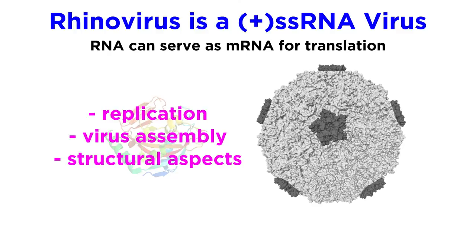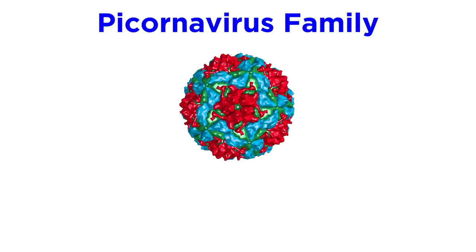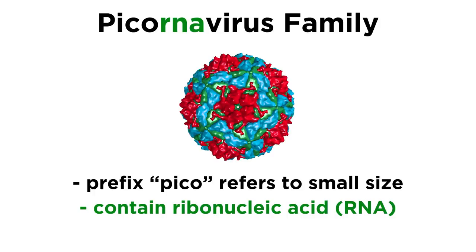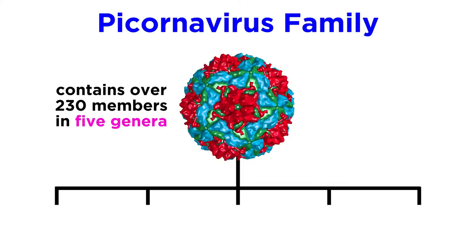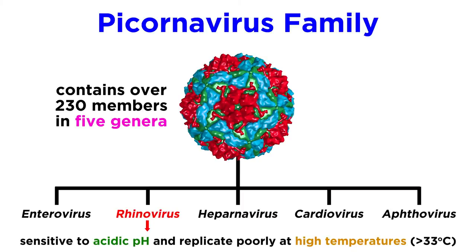We also know that rhinoviruses don't have an envelope surrounding their RNA. Now let's dig into what it means to be a part of the picornavirus family, which is one of the largest families of viruses. These viruses are small, hence the prefix pico, and contain ribonucleic acid, hence the RNA. They also have a naked capsid structure. The picornavirus family has over 230 members, which are divided into five genera: enterovirus, rhinovirus, heparnavirus, cardiovirus, and apthovirus. Rhinoviruses are known to be sensitive to acidic pH and replicate poorly at temperatures above 33 degrees Celsius, which typically limits them to causing upper respiratory tract infections.